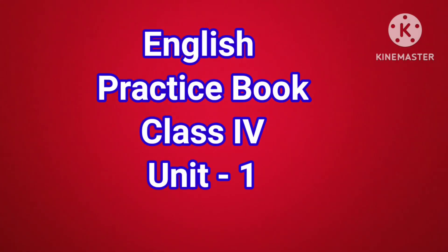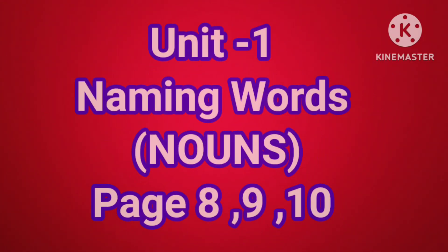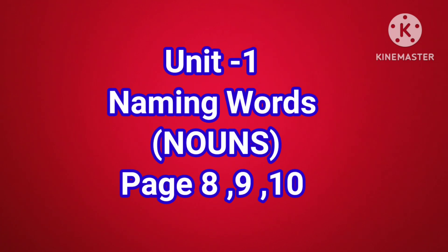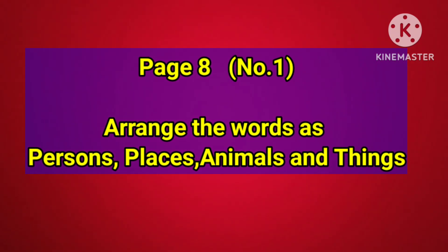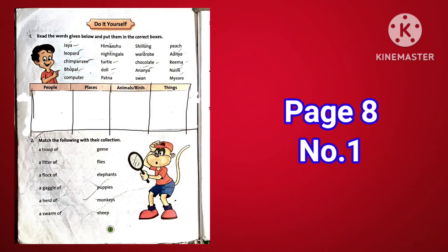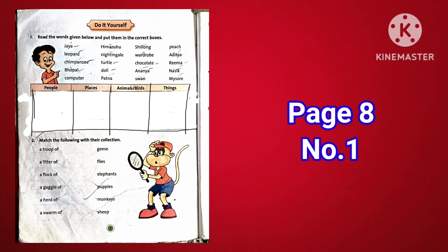English Practice Book, Class 4, Unit 1: Naming Words, pages 8, 9, and 10. Number 1: Arrange the words as persons, places, animals and things.